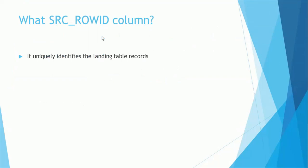What is the source row ID column? The source row ID column is present in the landing table and is used to uniquely identify landing records. The source records in the landing table do not have any unique identifier, and there is no constraint on the landing table, so records could be duplicates. In order to trace records uniquely, the source row ID is very helpful and is particularly used for that purpose.